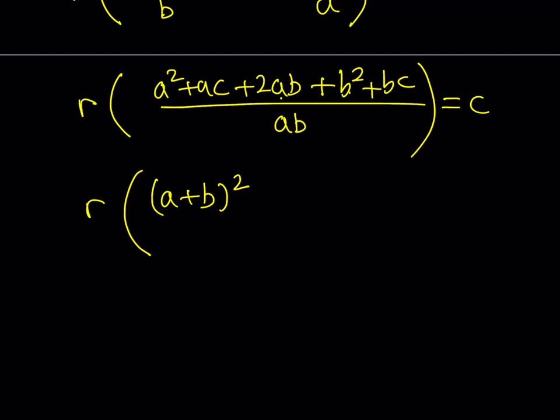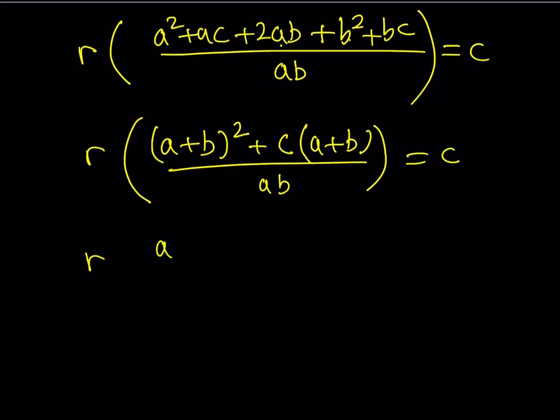Like, I can factor out the c, and that gives me c times the quantity a plus b over ab, and that's equal to c. See where I'm going with this? Now, I can factor out the a plus b, and then that's going to give me a plus b plus c, and that is divided by ab and is equal to c.